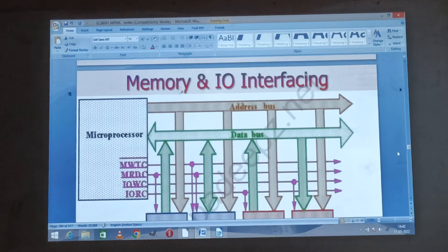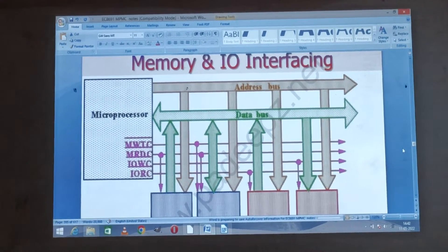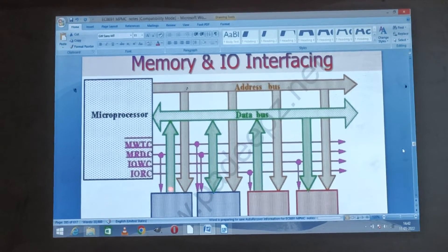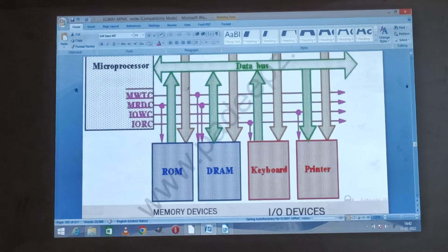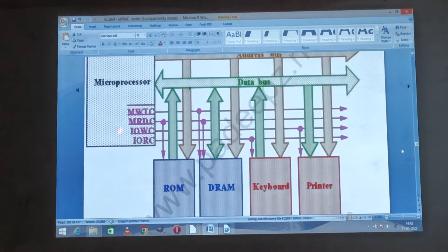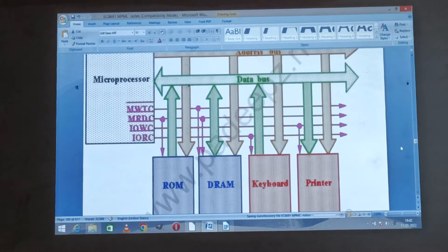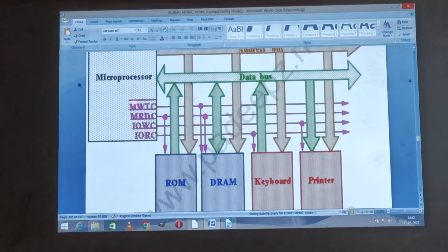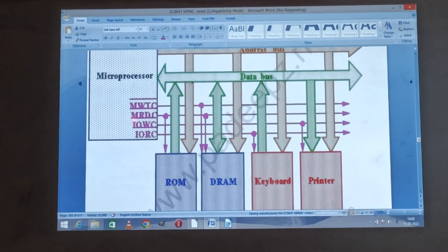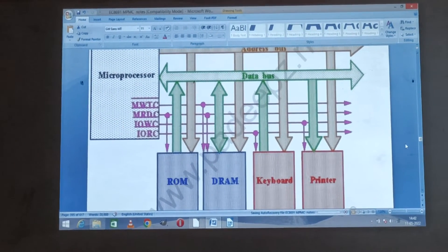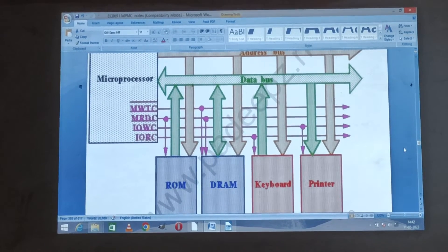Next, the title is memory and input output interfacing. The memory and input output interfacing is very important. The microprocessor address bus is used in memory. It is a part of the microprocessor pin diagrams of maximum mode. Memory write operation, write command, memory read command, input output write command and input output read command. These pins are used in memory and input output interfacing.